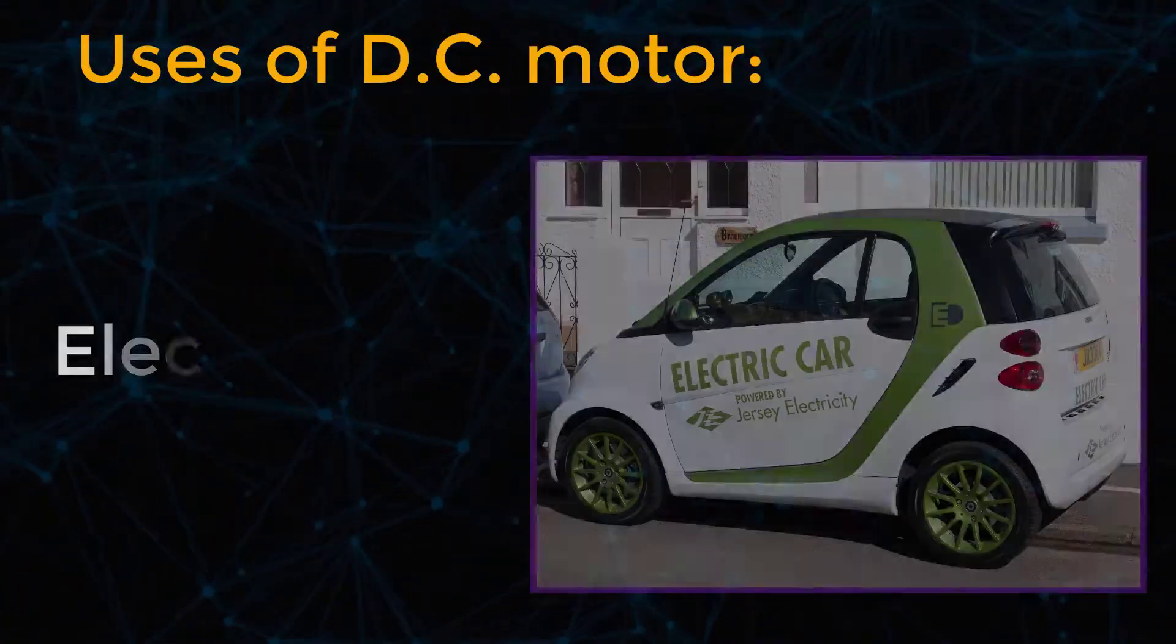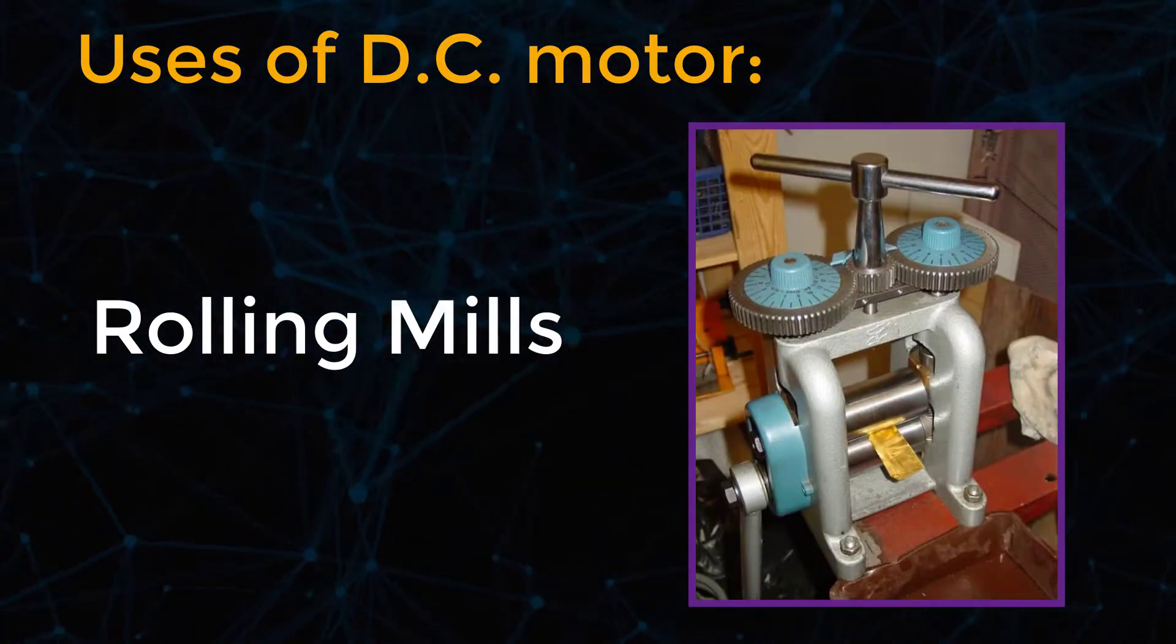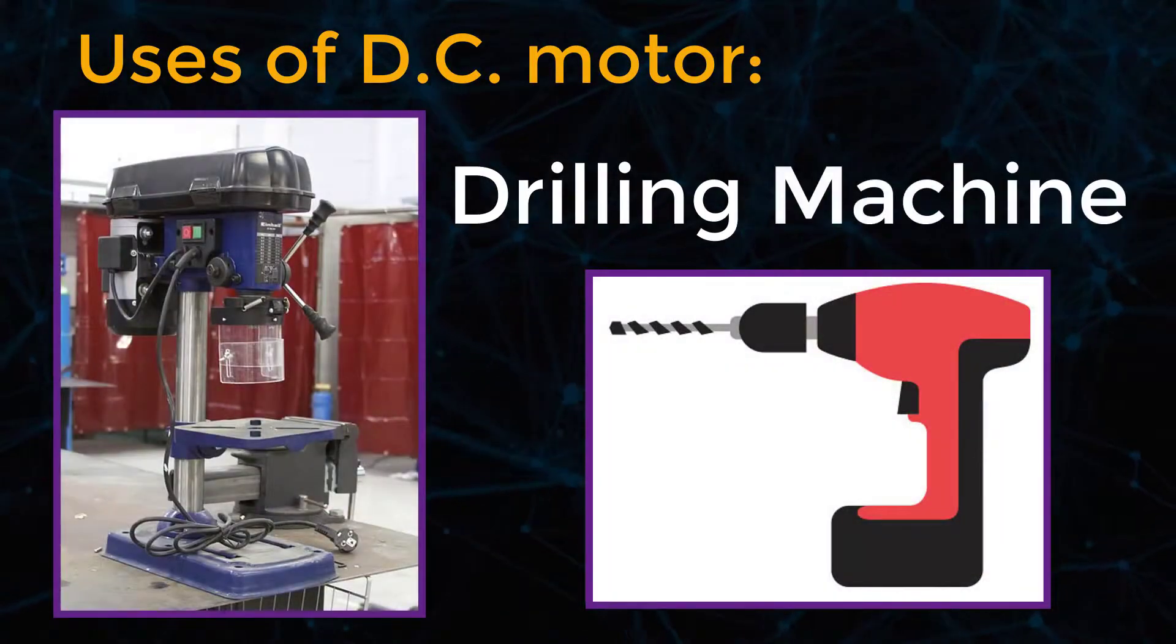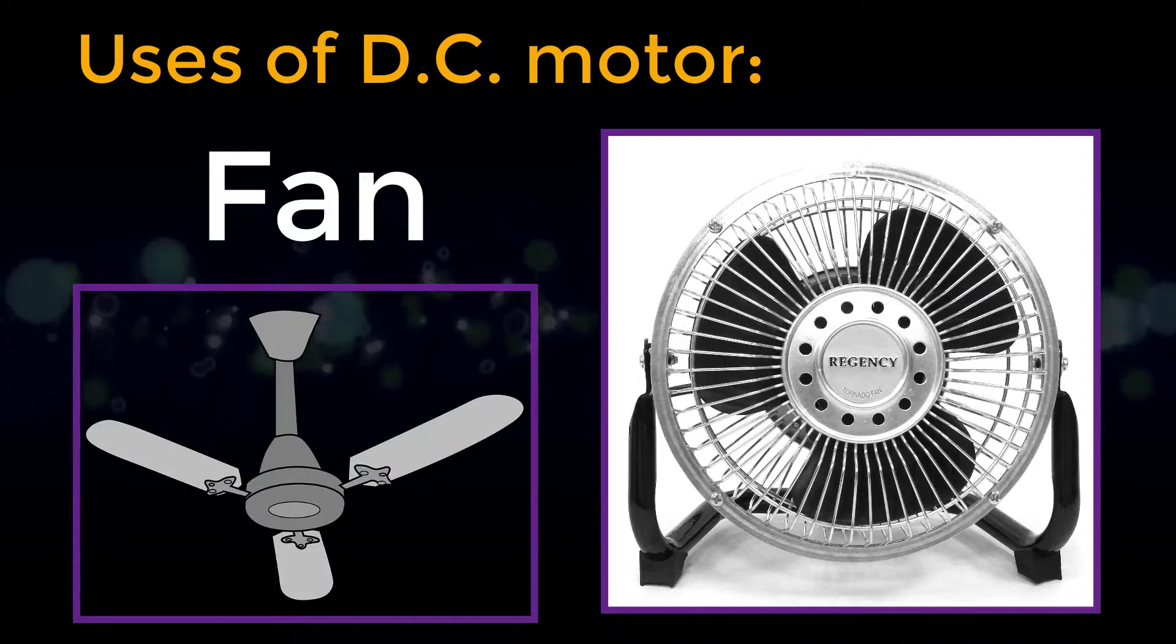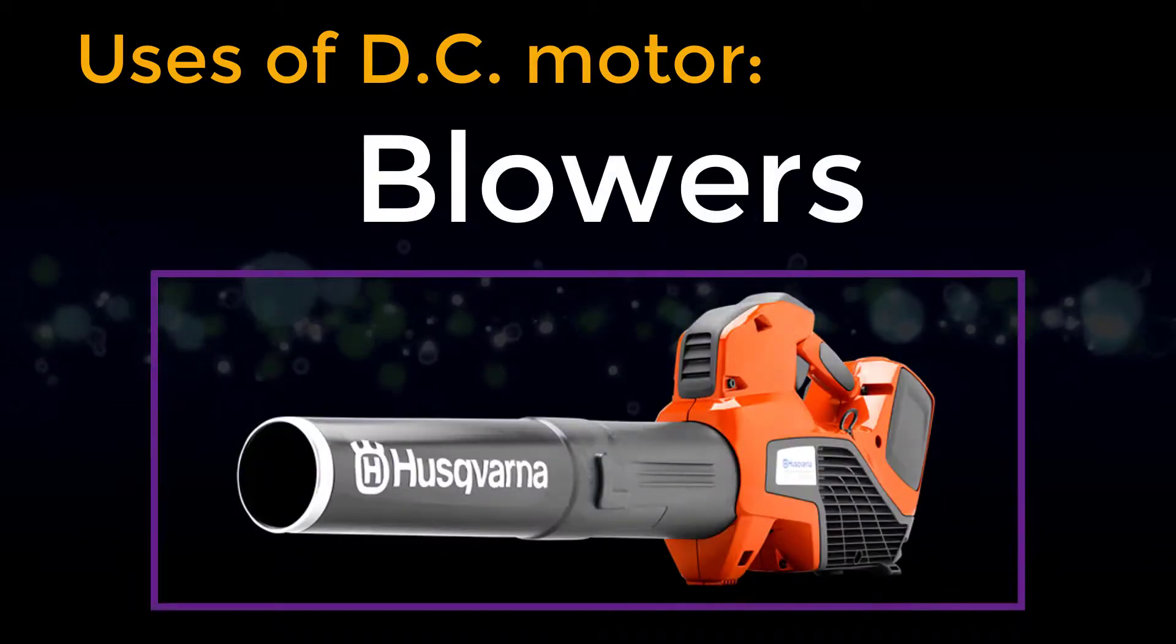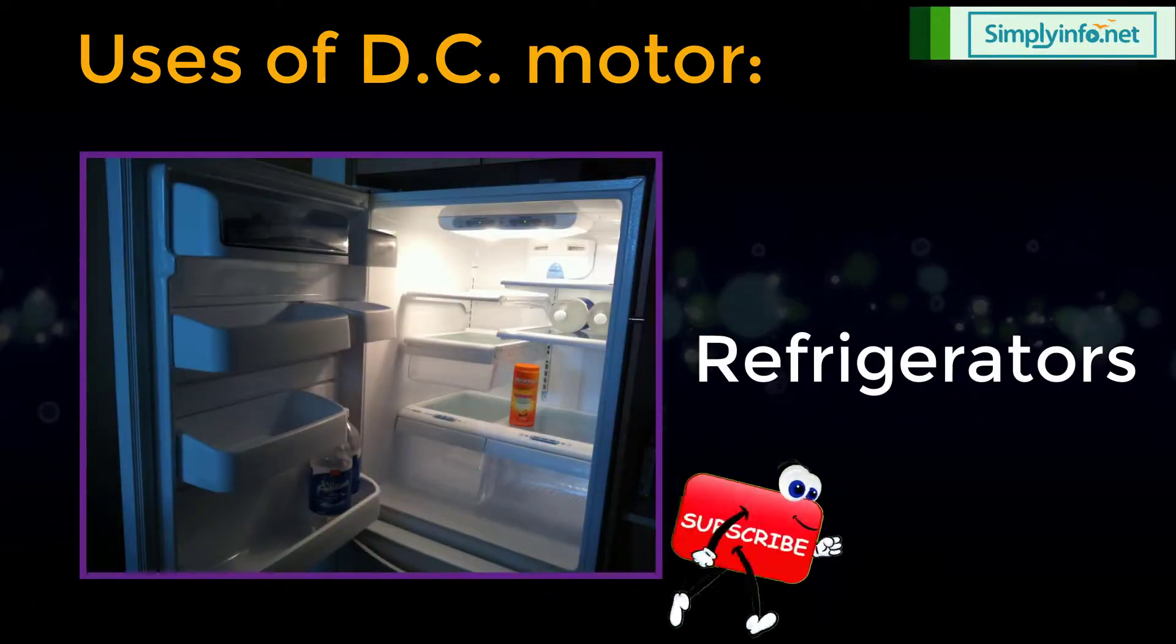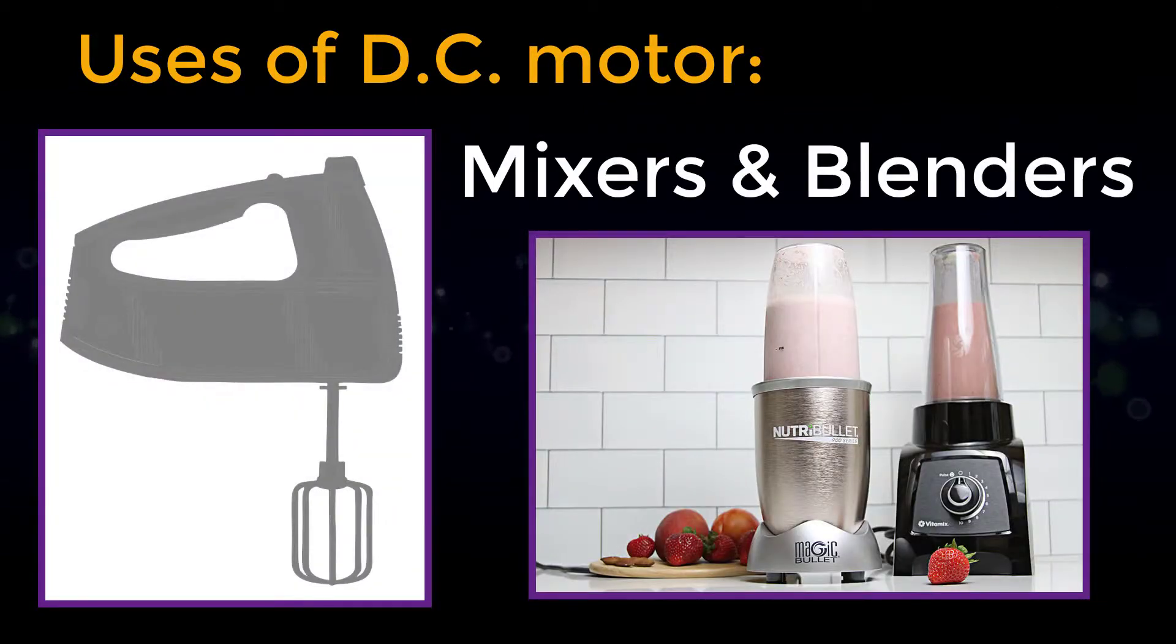Uses of DC motor: It is used in electric cars, rolling wheels, electric cranes, lifts, drilling machines, fans, hair dryers, blowers, tape recorders, refrigerators, washing machines, mixers and blenders.